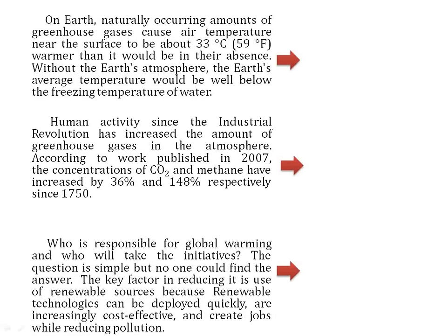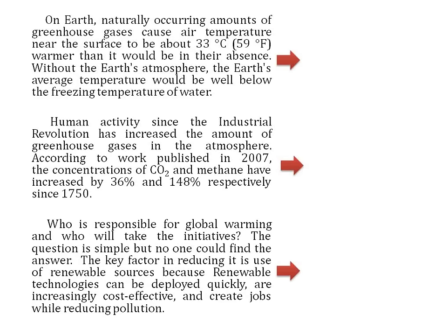The third paragraph is important: who is responsible for global warming and who will take the initiatives? The question is simple but no one could find the answer. The key factor in reducing it is the use of renewable sources, because renewable techniques can be deployed quickly, are increasingly cost-effective, and create jobs while reducing pollution. So in the third paragraph, the author talked about the solution: use of renewable sources.